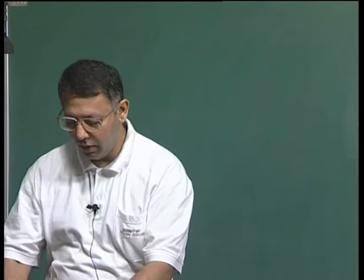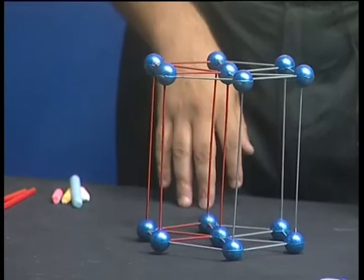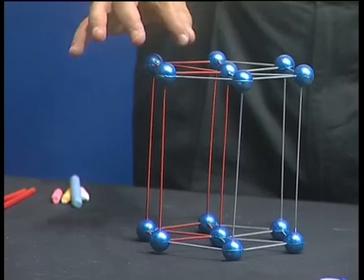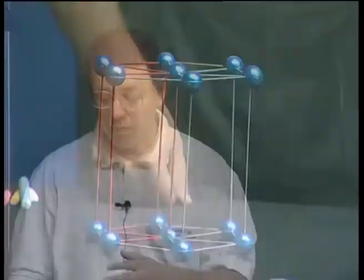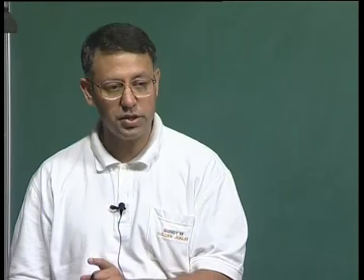Mr. Patel asks: what happens if we enforce I, F, or C centering on the hexagonal lattice? This is precisely the question we will address in the coming slides. We will perform that hypothetical experiment and show why those additional lattice types do not exist for the hexagonal system. This is a great question and we will take it up very soon.